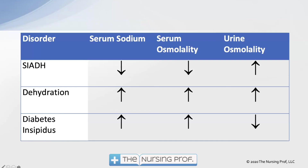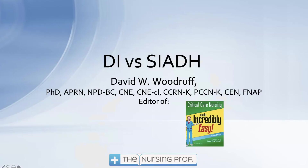Diabetes insipidus is the opposite: a patient who is diuresing heavily would be expected to have a low serum sodium suggesting volume overload, but in fact their serum sodium is high — those things don't fit. Look for these problems in patients with head injuries or lung disorders. Check whether the serum sodium fits what the urine looks like. If it doesn't, consider diabetes insipidus versus SIADH. Thanks for joining.